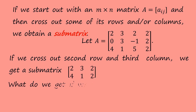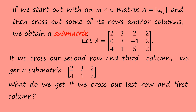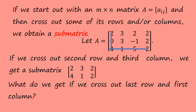What do we get if we cross out the last row and first column? Please pause the video and try the question before you proceed. We are supposed to arrive at this result.